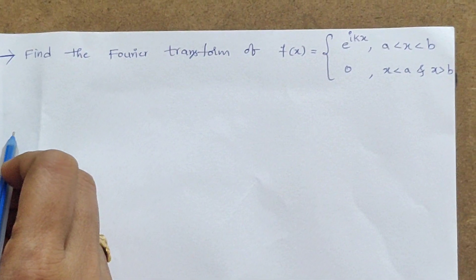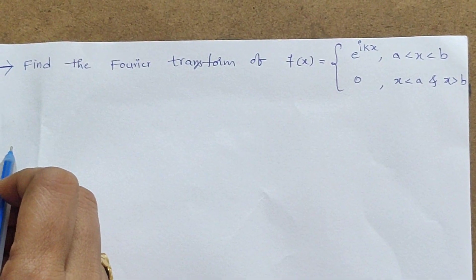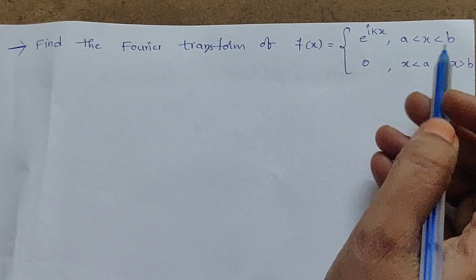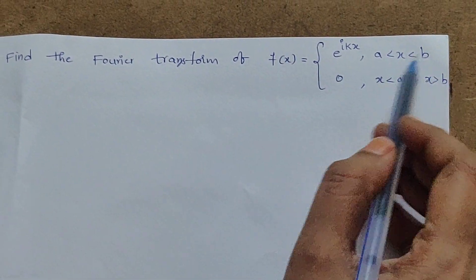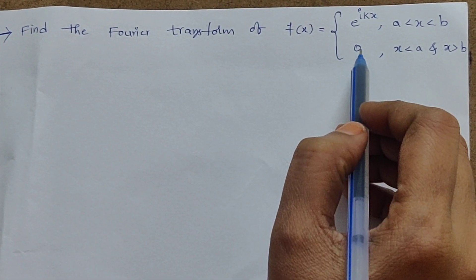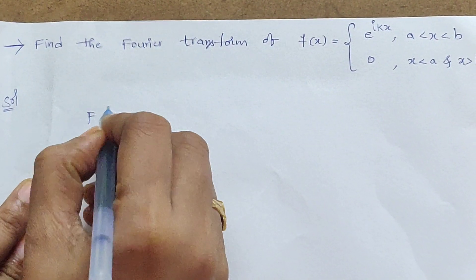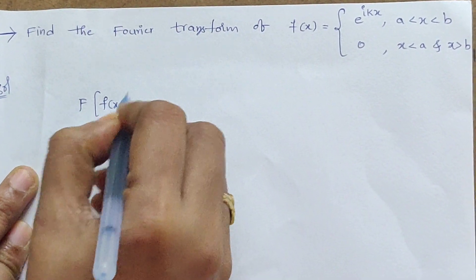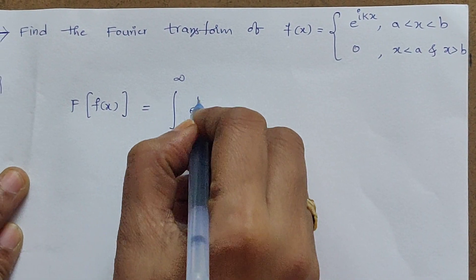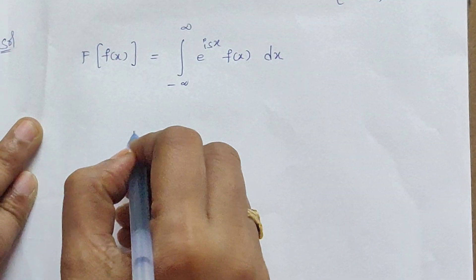Now we are doing problems on Fourier transforms. The problem is: find the Fourier transform of the function f(x), defined as e^(ikx) between a and b, and 0 in the remaining case. We know the definition of the Fourier transform: the Fourier transform of f(x) is defined as the integral from minus infinity to infinity of e^(isx) f(x) dx.